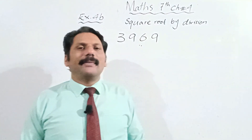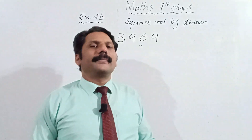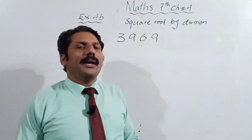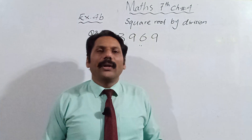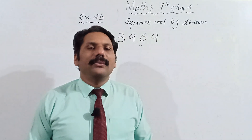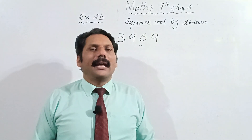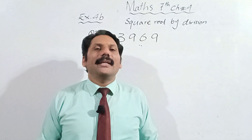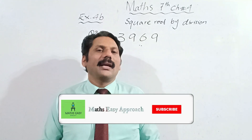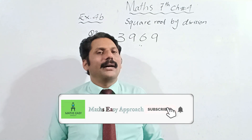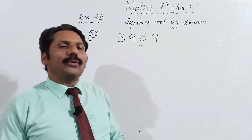Got questions friends? Mathematics class 7th, chapter number 4, exercise 4B — today we will do. In the previous exercise 4A we learnt how to find the square root by prime factorization, and today we will learn how to find the square root by division method. It is a very easy method; I will solve the question and explain the method as well.